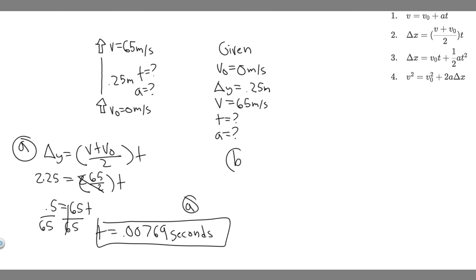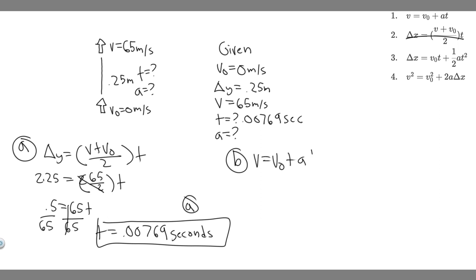Now let's move on to Part B. Since we now know T, I'll also write in 0.00769 seconds. Now we want to solve for the acceleration. Notice we now have four kinematic variables. When you have four, you can use any equation that contains the variable you're solving for. We can't use the equation from Part A because it doesn't contain A. The easiest option is equation 1: V equals V₀ plus A times T. We have V, we have V₀, and we now have T, so we can solve for A.